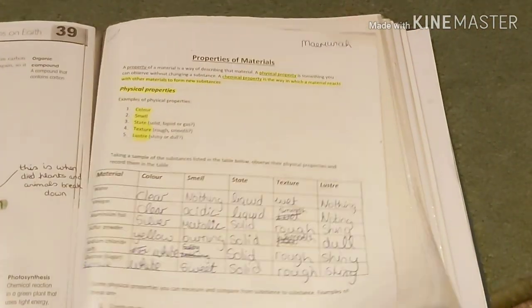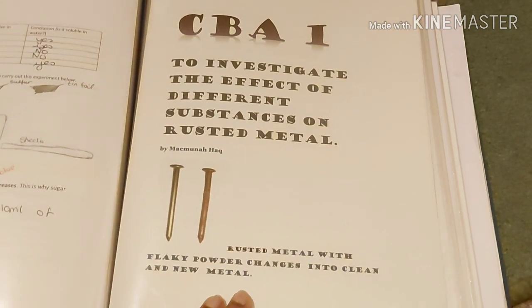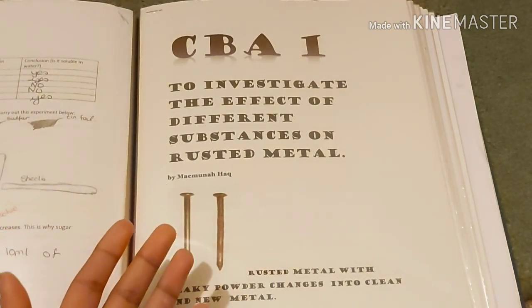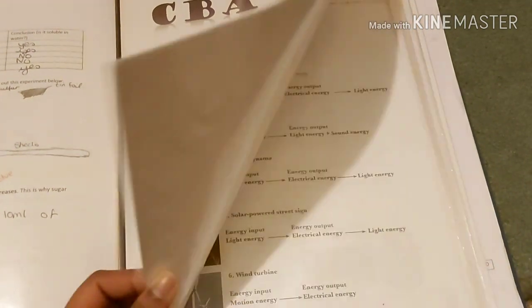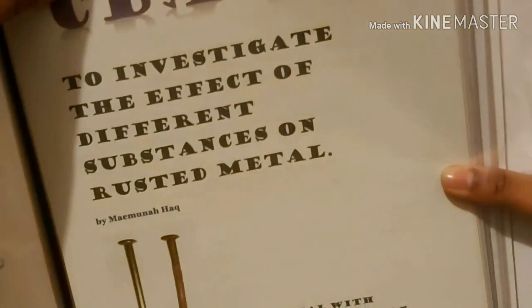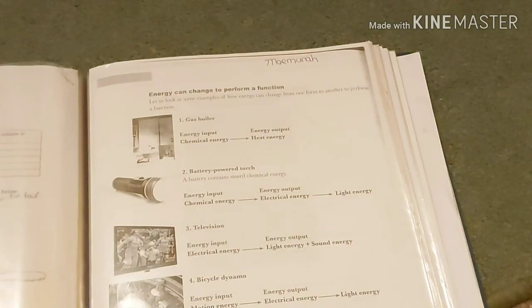Here I'm going to go through my CBA that I did last year. It's on how to investigate the effect of different substances on rusted metal. I'm just going to take it out from my folder and go over it.